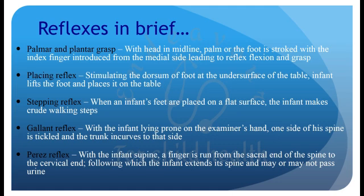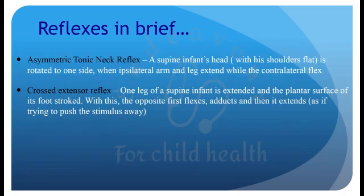Gallant reflex: with the infant lying prone on the examiner's hand, one side of the spine is tickled and the trunk incurves to that side. Perez reflex: when the infant is supine, a finger is run from the sacral end of the spine to the cervical end, following which the infant extends its spine and may or may not pass urine. Asymmetric Tonic Neck Reflex: a supine infant's head with shoulders flat is rotated to one side — the ipsilateral arm and leg extend while the contralateral ones flex.